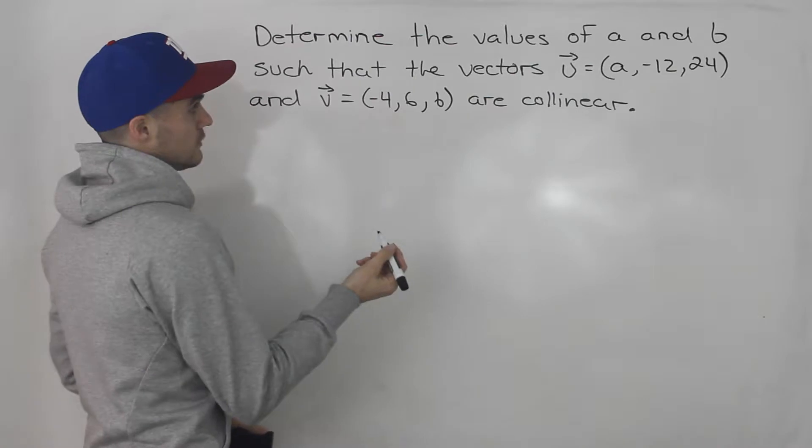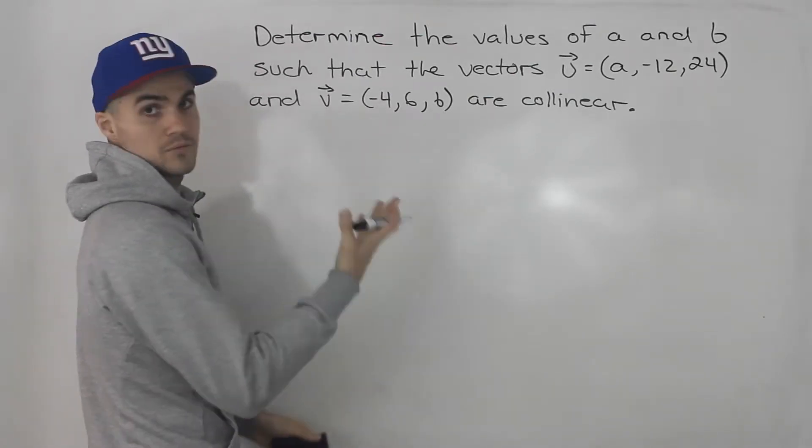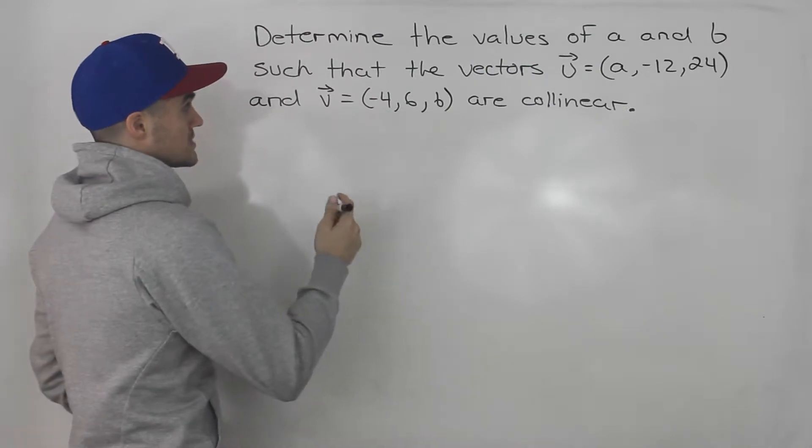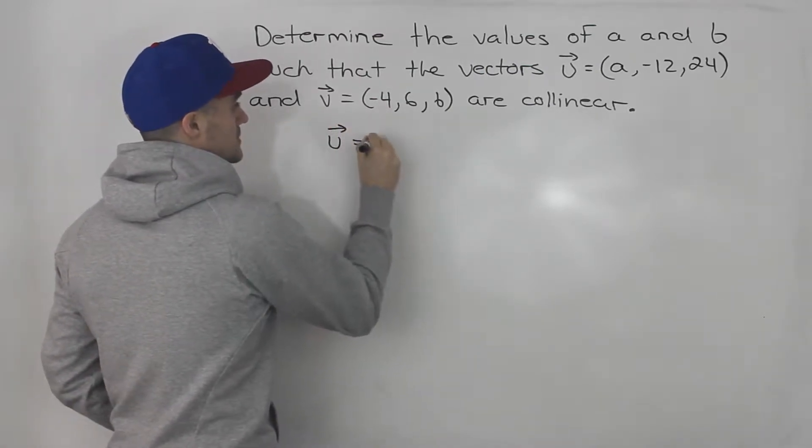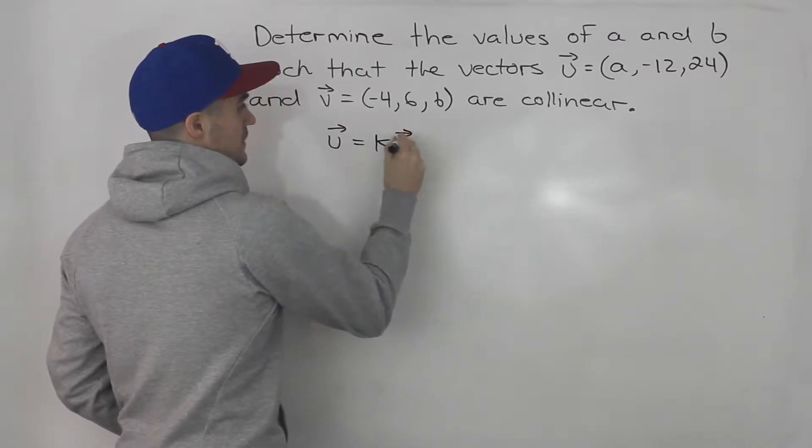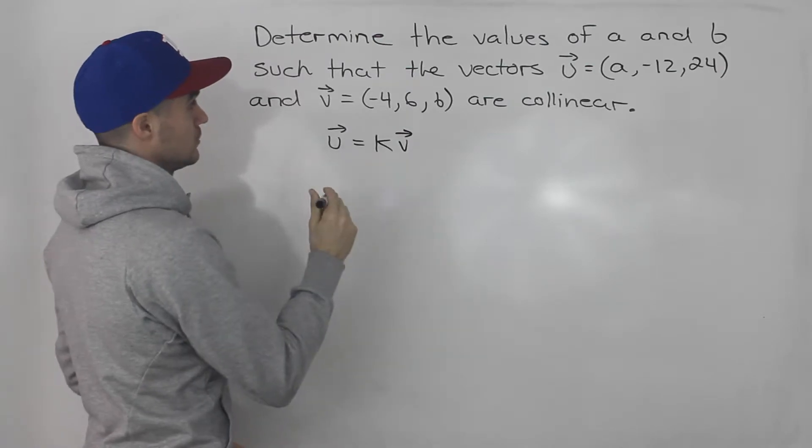Now if you remember, collinear vectors are ones where you can relate them with a scalar multiple. So for example, we can make U equal to some scalar K times V. If this can happen, then that means the vectors are collinear.